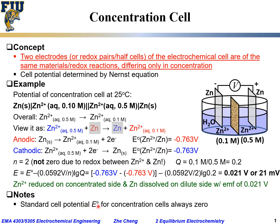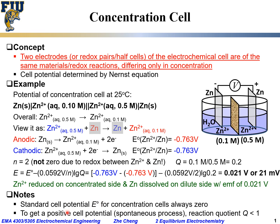A few final notes: the standard cell potential E0 for a concentration cell will always be 0, because the anodic and cathodic half cells are based on the same redox pair — their subtraction always gives zero. Additionally, to obtain a positive cell potential, the reaction quotient Q must be smaller than 1. In this case Q is 0.2, which is less than 1, and combined with the minus sign in the Nernst equation, yields a positive cell potential.